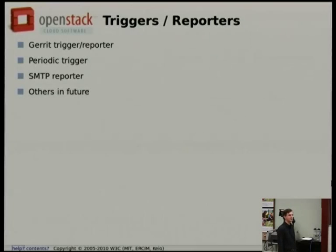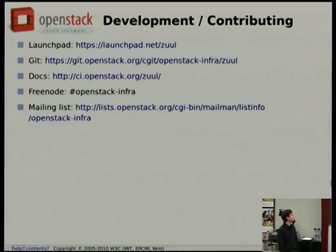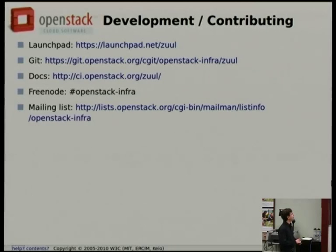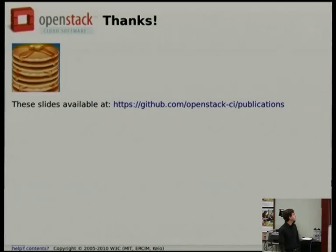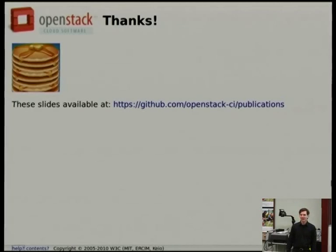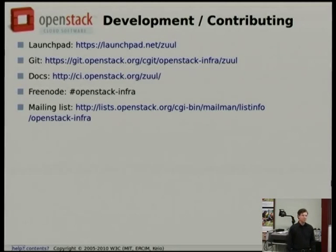This is all free software under the Apache license. You can get it from git.openstack.org, it has bugs on Launchpad, docs on our doc site, and we hang out in the openstack-infra channel on Freenode. We love to talk about this stuff and there's a mailing list you can subscribe to as well. These slides are available at docs.openstack.org/infra/publications.